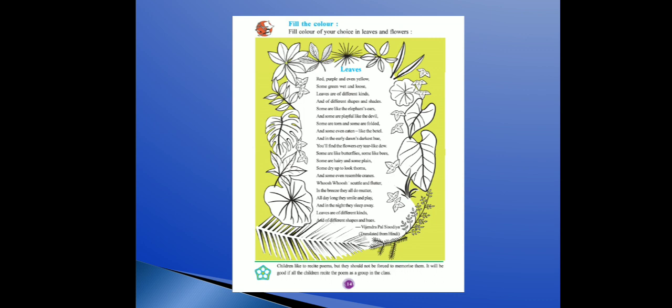Some are like butterflies, some like bees. Some are hairy and some plain — koi leaves aise dikhte hain jaise unke upar baal ho, hairy means baal ho, aur some are plain. Some dry up to look like thorns — koi-koi leaves aise dikhte hain jaise dry up mein sukh gaye ho, throne means kaante ki tarah sukha hua leaf dikhta hai.